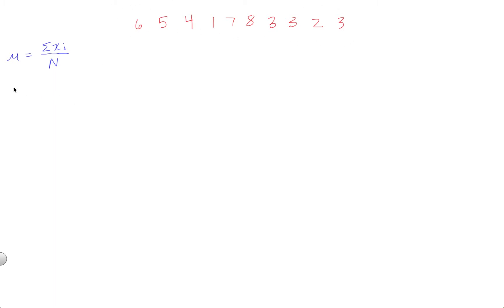For a sample mean, x̄, the formula looks very similar, except in the denominator we have the sample size, little n, instead of the population size, capital N.